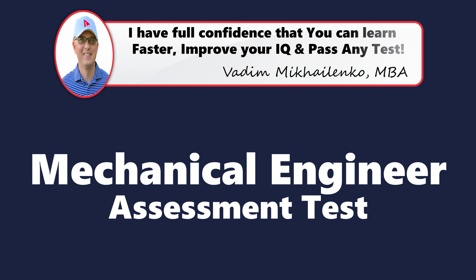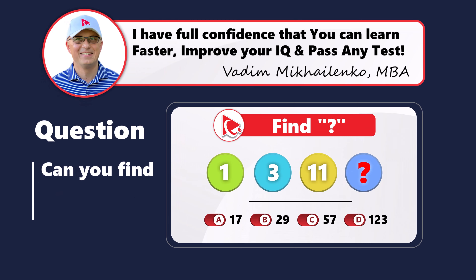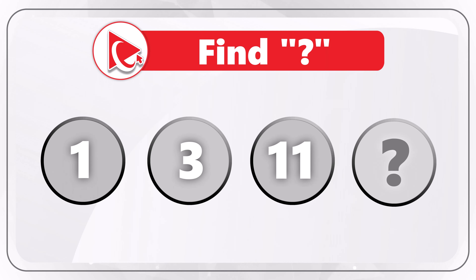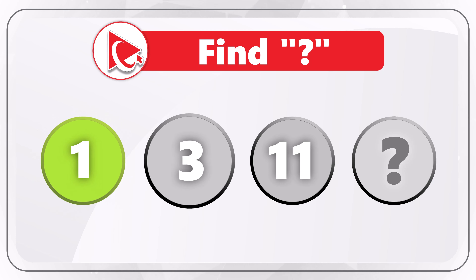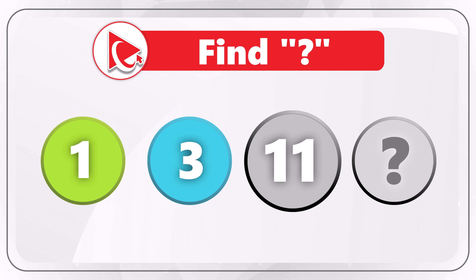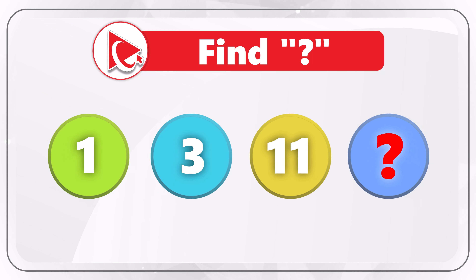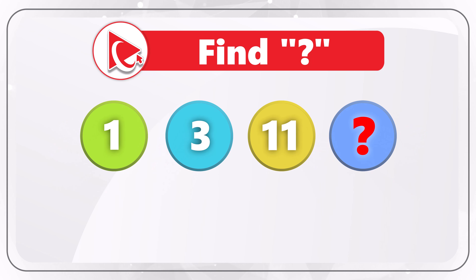Here's a question where you might struggle to get to the correct answer, but I have full confidence that you'll be able to solve this challenge. You're presented with a sequence of numbers: 1, 3, 11, and then comes the missing number. You need to determine the missing number and rationalize your solution by selecting one of four possible choices.